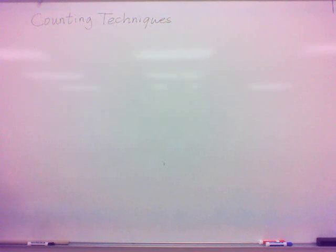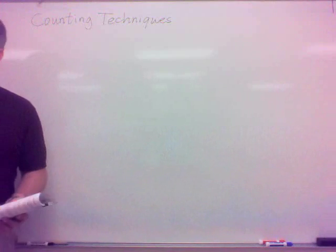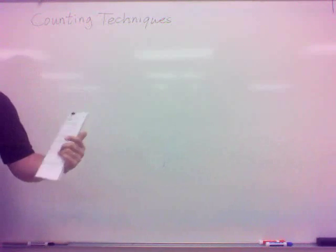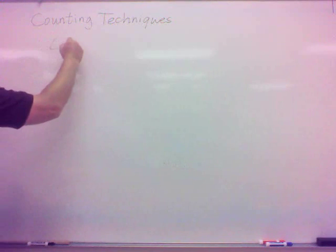All right, we're going to talk a little bit about how we can figure out how many ways a certain event can occur. Like if I roll a pair of dice, how many different outcomes are there? That'll be one of them that we explore, and then some various others. We're just talking about how we can get how many ways something can occur.